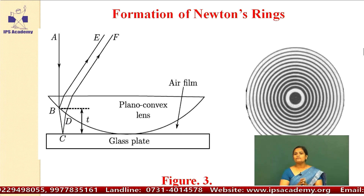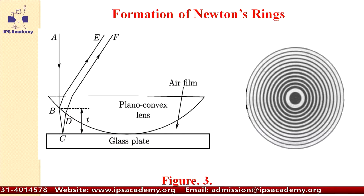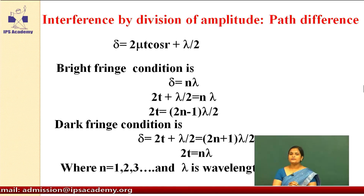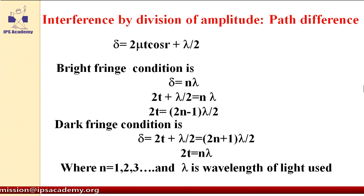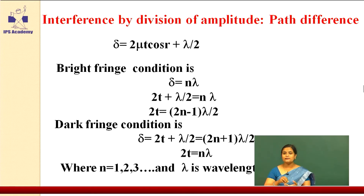The locus of the plano-convex lens is spherical in shape; hence, we observe a ring-like structure. As seen in figure number 3, the center is dark — this is destructive interference — then bright, then dark. Alternating dark and bright fringes are observed. These are the constructive and destructive interference, and because of the locus of the plano-convex lens, they are obtained in the form of rings. This is the concept of interference when we find the condition of dark and bright fringes.